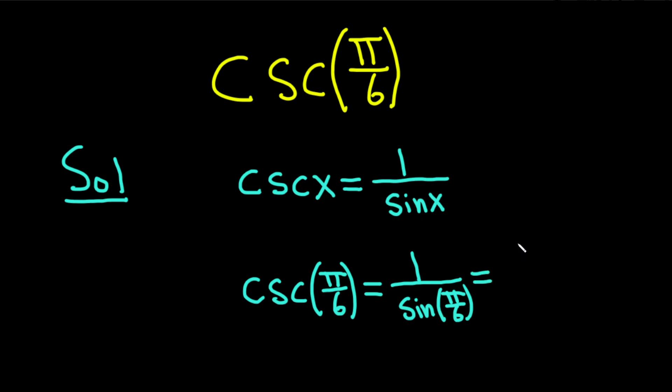This is equal to 1 over the sine of pi over 6, which is equal to 1 over 2. It's important to put a parenthesis here, so this is parenthesis 1 over 2. We have 1 divided by this number 1 over 2.